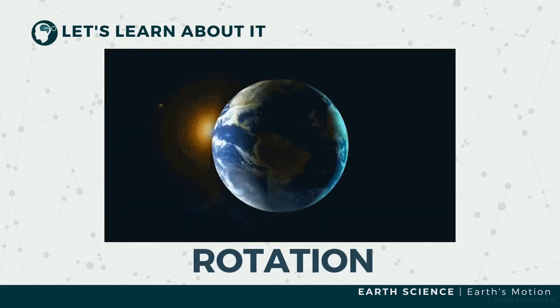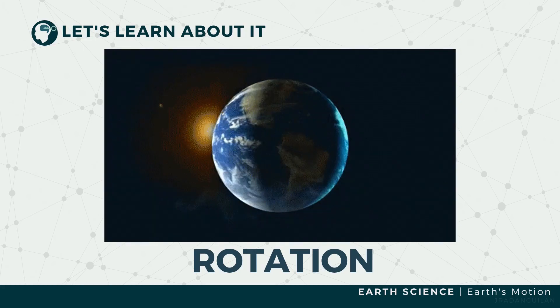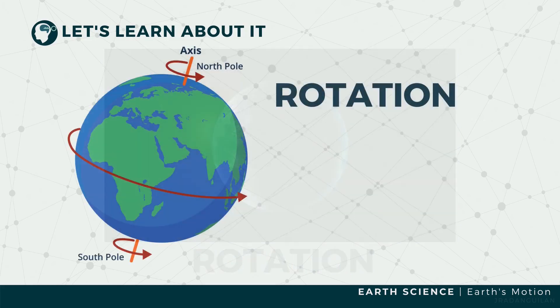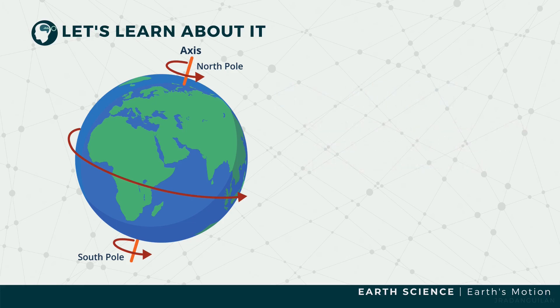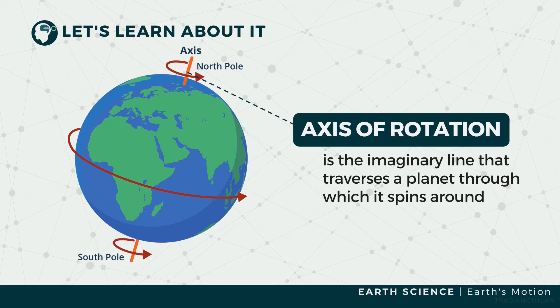Rotation is the circular motion of an object around a fixed line that crosses the center of this object. This line is called the axis of rotation.